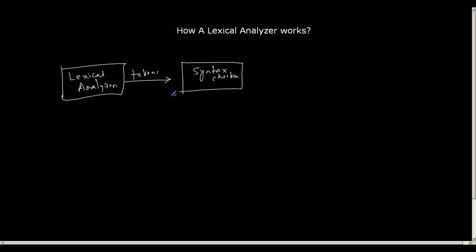What the syntax checker first does is it sends a request to the lexical analyzer to give the next token by reading the input string. Now the lexical analyzer will do its processing — it tries to match the maximum possible substring in the input string with a given pattern and creates a token. Then it sends this token to the syntax checker, and as soon as it sends that, it gets suspended, till the syntax checker sends another request for a token.